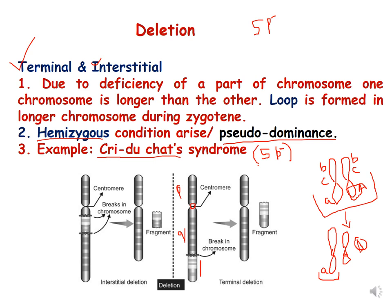Because of the deleted part of the chromosome, even the recessive alleles now start expressing, resulting in pseudodominance of recessive alleles. In the absence of the dominant allele, this condition is known as the hemizygous condition.